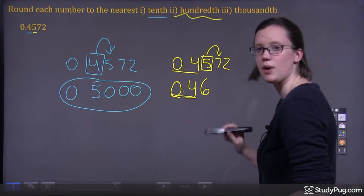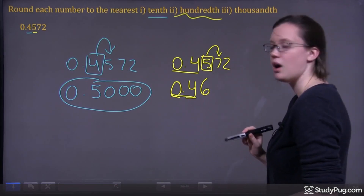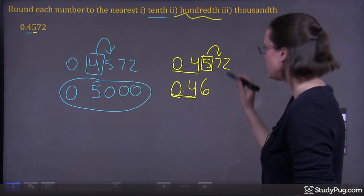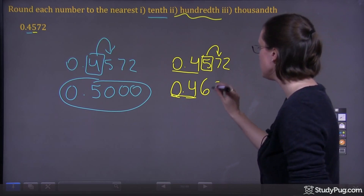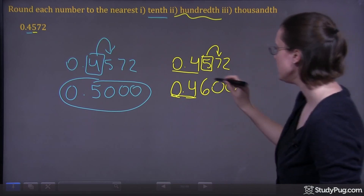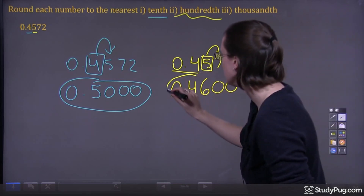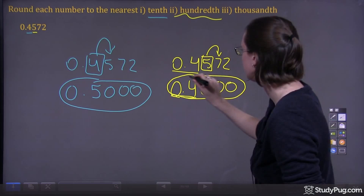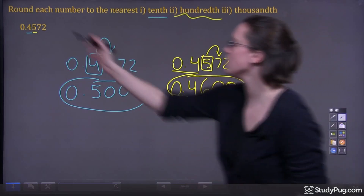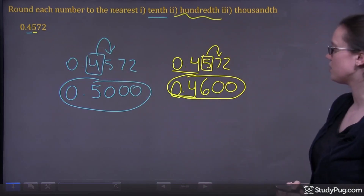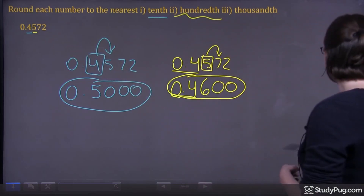And now what comes after the rounded number changes to zeros. So instead of seven, two, we're going to have zeros. So this number here is our number rounded to the nearest hundredth.